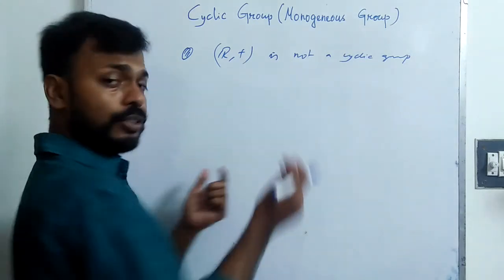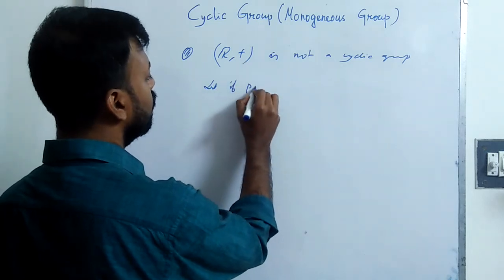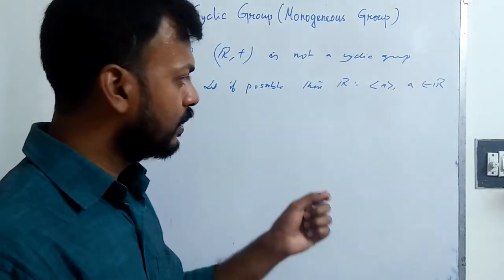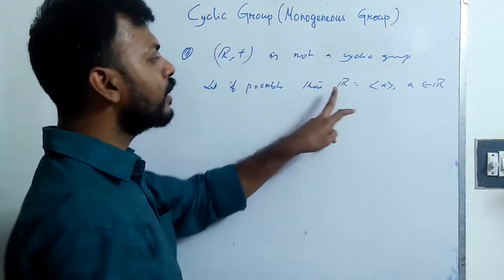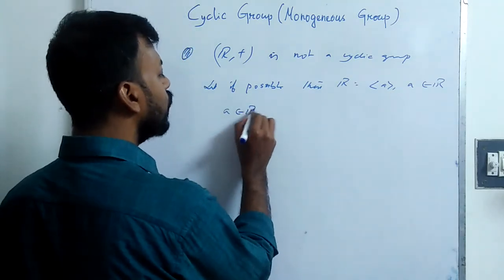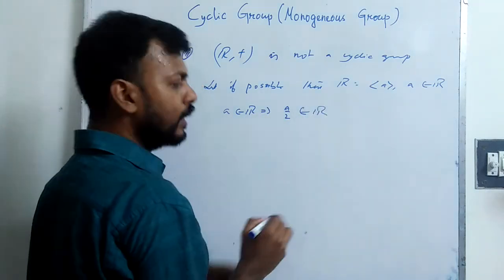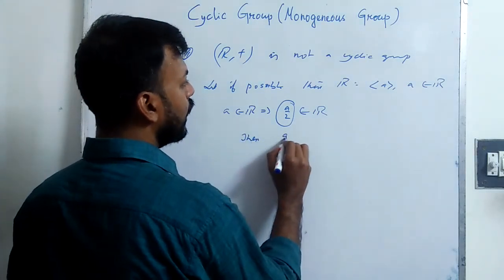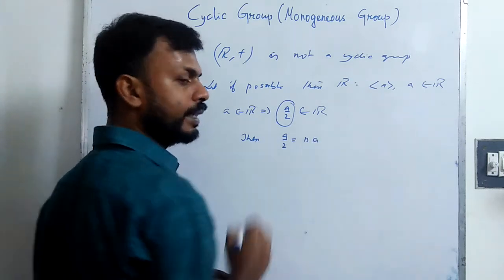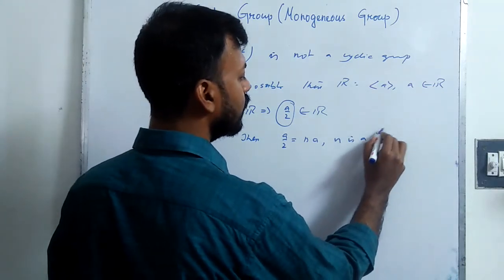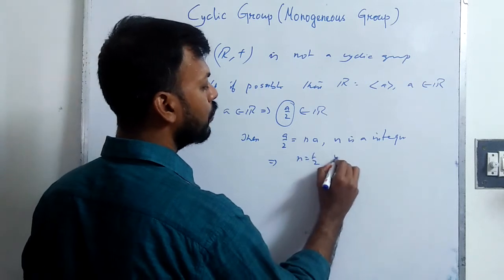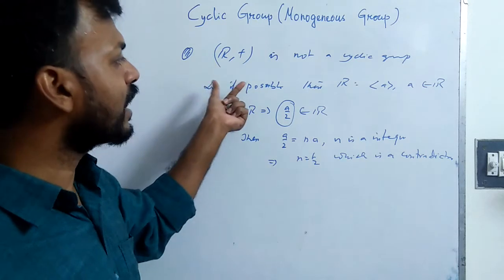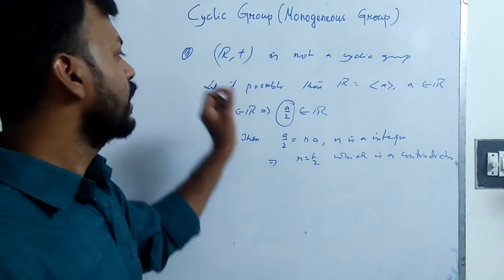Now I will give you an example which is not cyclic. We have Z+ is a cyclic group, but R+, the set of all real numbers with respect to addition, is not a cyclic group. If possible, suppose R is generated by some element a in R. Then every element of R should be generated by a. Since a belongs to R, a divided by 2 also belongs to R. Then a/2 should be expressible as n times a for some integer n. This gives n equals one-half, which is a contradiction. So there is no element in R which can generate all the elements of R, and thus R+ is not a cyclic group.